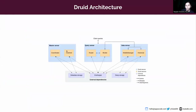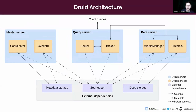Now we are going to look at the architecture of Druid. As you can see in the diagram, Druid has a distributed architecture that is designed to be cloud-friendly and easy to operate. This design includes enhanced fault tolerance, meaning an outage of one component does not immediately affect the others — for example, if the router is unavailable, that does not affect the availability or stability of the coordinator, overlord, or any other processes in Druid.